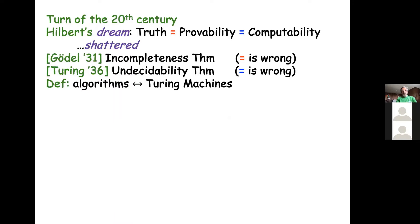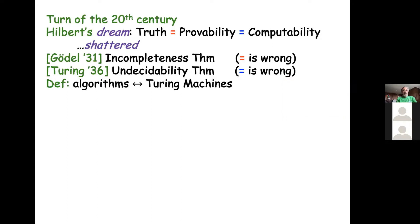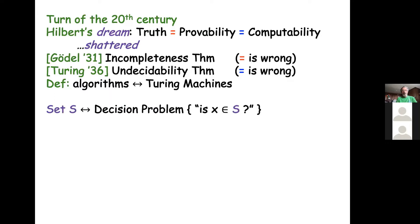In his famous paper, Turing introduced Turing machines and used them as a formal model for algorithms. That was, of course, the birth of the computing revolution. But I want to talk about the theoretical part — this theorem. For this, we have to understand what algorithms compute.